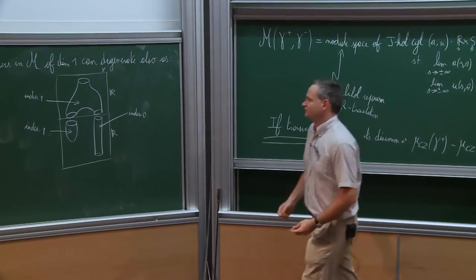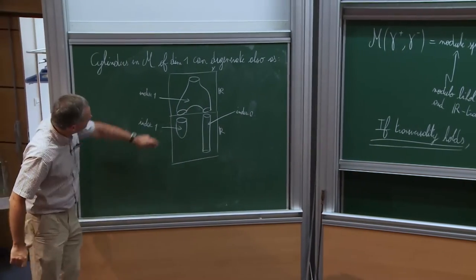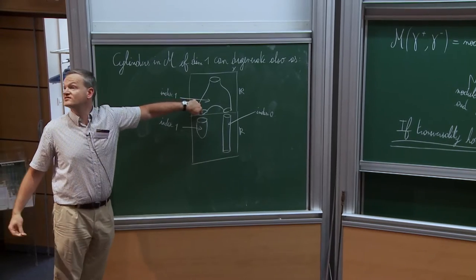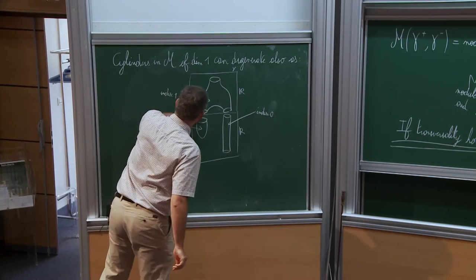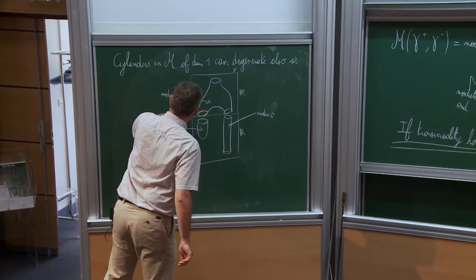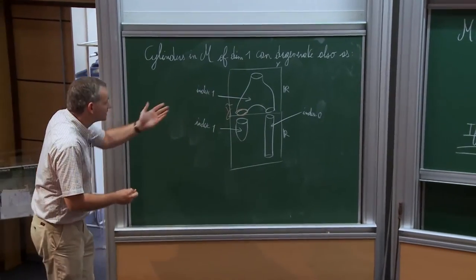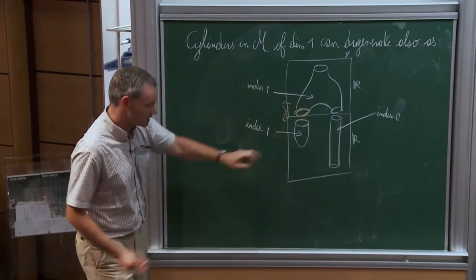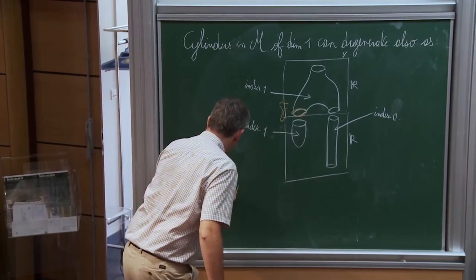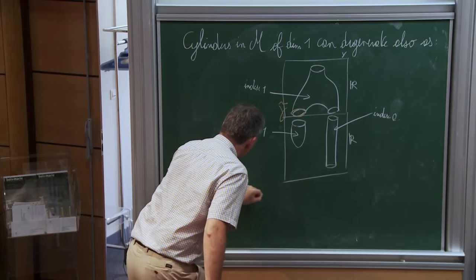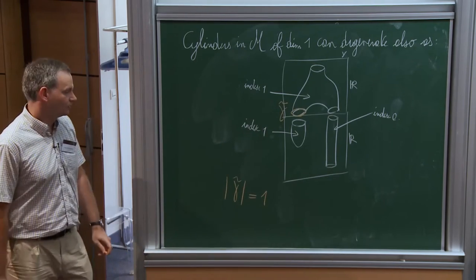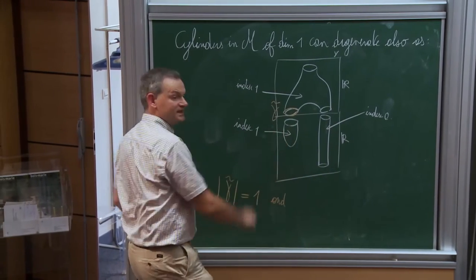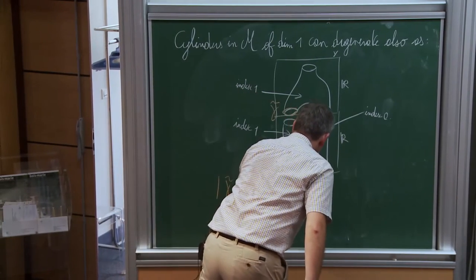If we want to get a differential, we need to prevent that sort of phenomenon from happening. One way is to prevent the orbit where the breaking occurs from existing. If I call this orbit γ̃, then due to the index being one, the contact homology grading of γ̃ is equal to one. And since it bounds a plane, it is a contractible orbit.